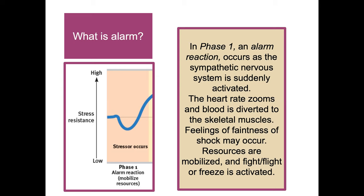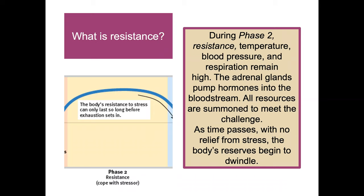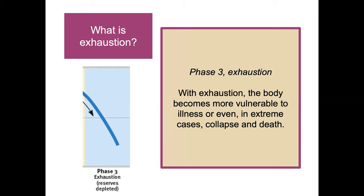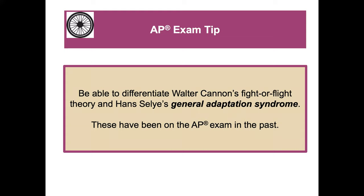In phase one, an alarm reaction occurs as the sympathetic nervous system is suddenly activated — heart rate zooms, blood is diverted to skeletal muscles, feelings of faintness may occur, and fight, flight, or freeze is activated. In phase two, temperature, blood pressure, and respiration remain high, adrenal glands pump hormones into the bloodstream, and all resources are summoned. As time passes with no relief, the body's reserves dwindle. In phase three, exhaustion, the body becomes more vulnerable to illness or, in extreme cases, collapse and death. AP exam tip: be able to differentiate Walter Cannon's fight-or-flight from the general adaptation syndrome, as this has been asked on prior AP exams.